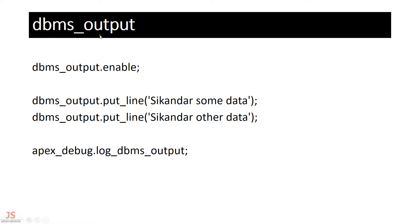In addition to the package, you can also use dbms_output — dbms_output.put_line — and display those messages in the Oracle Apex debug log. First enable debugging, then put your lines, and at the end call apex_debug.log_dbms_output to log the dbms_output messages inside the Apex debug.